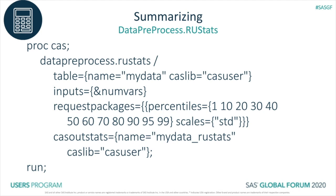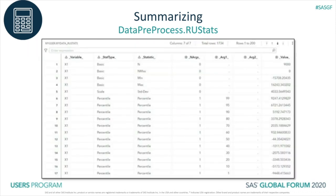Here is the RU stats statement that will calculate the percentiles for me. The table parameter picks the name of the table I'm interested in and the CASLib it sits in. Request packages sounds weird for a SAS programmer — that's just what it is. I need it because inside of it is the percentiles package. For its arguments, the percentiles package requires a list of quantiles or percentiles to compute. While I was at it, I went ahead and used the scales package to get the standard deviations. The action has other packages like centralized moments and skewness. The results are sent to a table named mydata_RUstats in the CAS user CASLib. Here's a screenshot of the mydata_RUstats table. From here, you can do anything you need with those values — that could include sending them through another action, a procedure, making a graph, or putting it in a report for your boss.